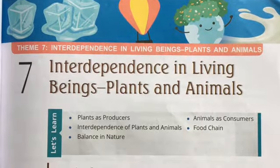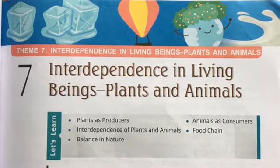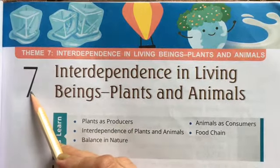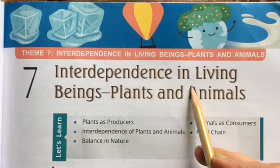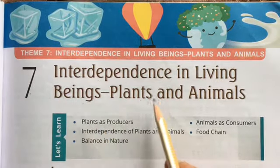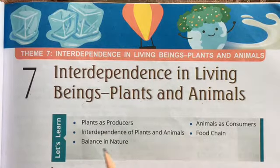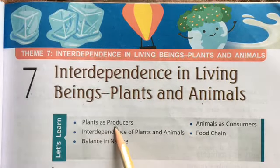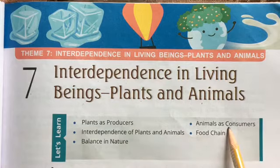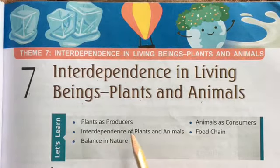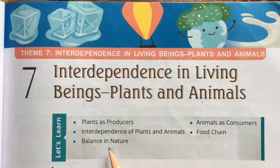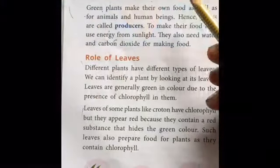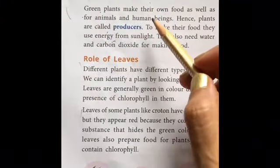Hello students, today we are going to study chapter number 7 of science series of class 5. This is interdependence in living beings — plants and animals. In this we are going to study plants as producers, animals as consumers, interdependence of plants and animals, food chain and balance in nature.